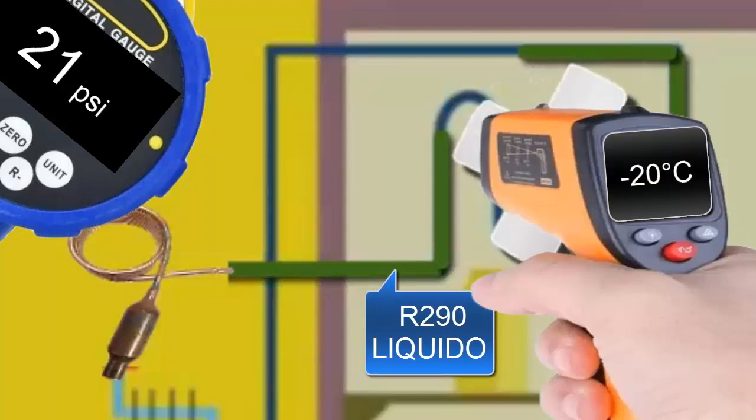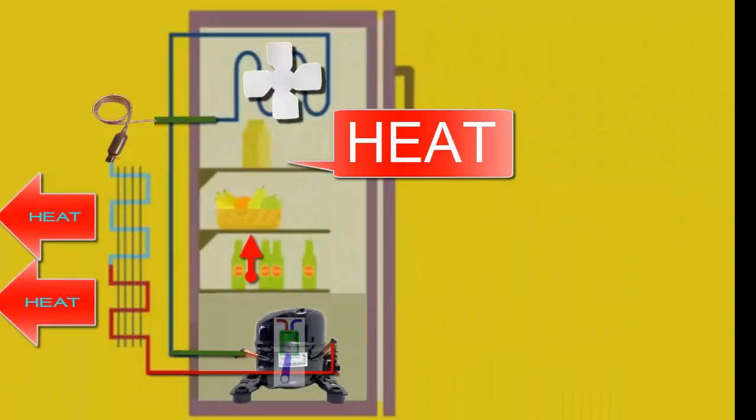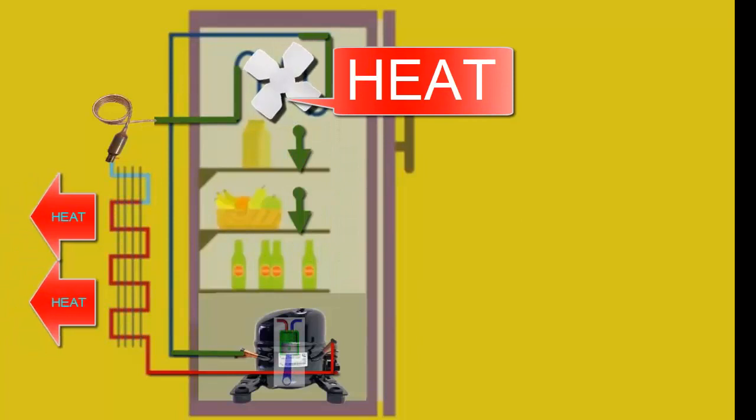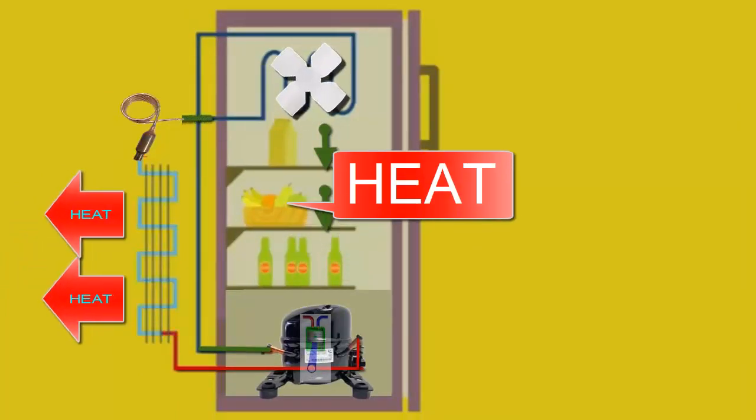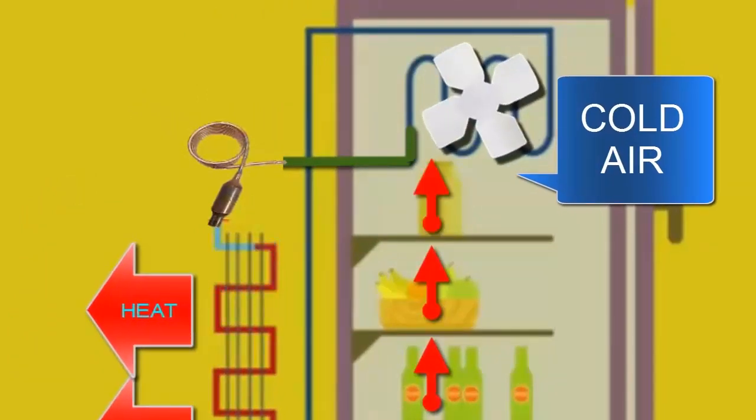With this low temperature and the help of the fan, the heat from the products inside the equipment quickly transfers to the R290 refrigerant, causing it to evaporate. As the R290 refrigerant absorbs heat from the stored products, they cool down, allowing for preservation.